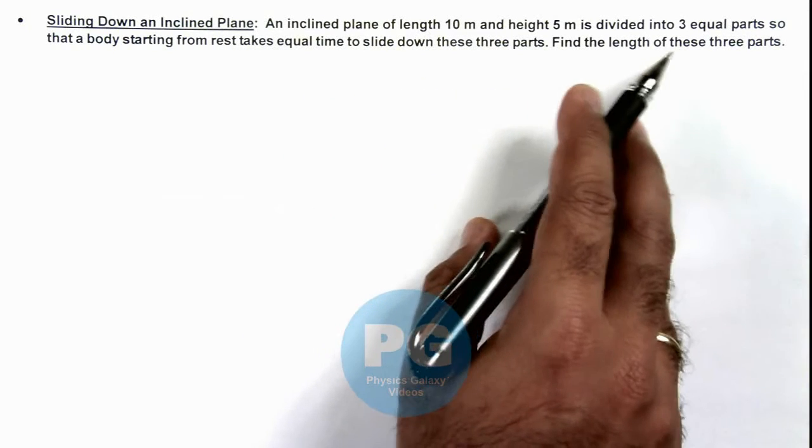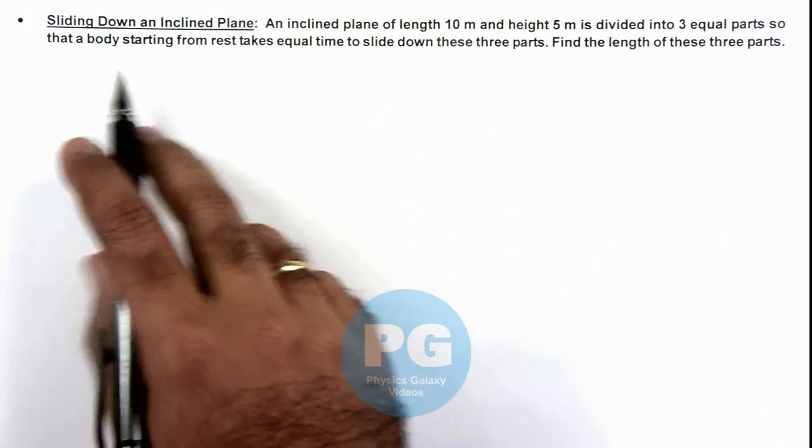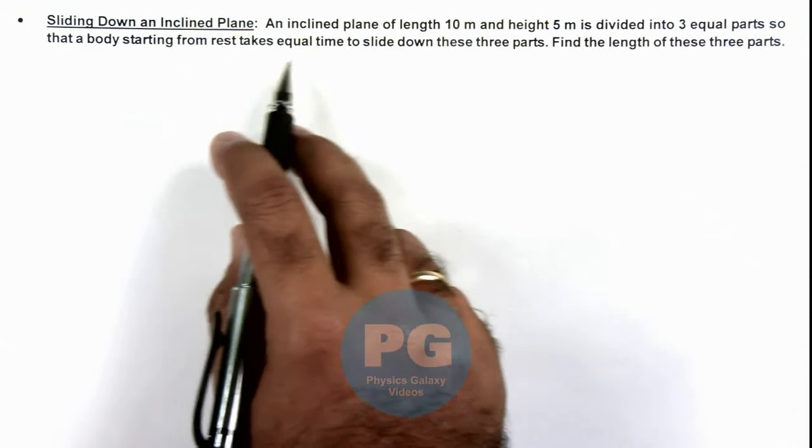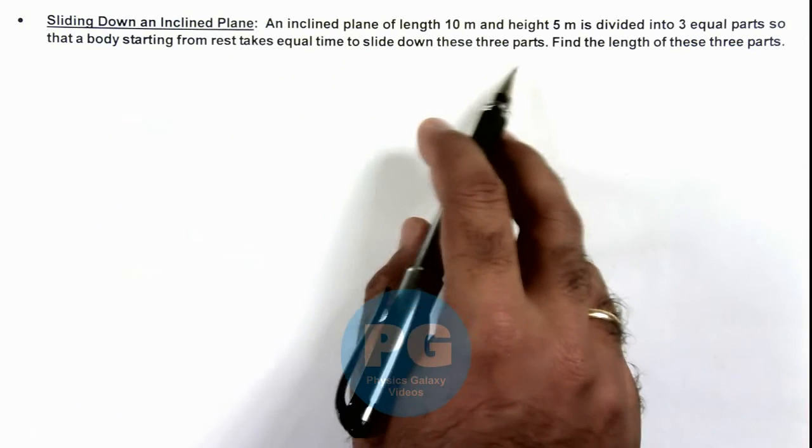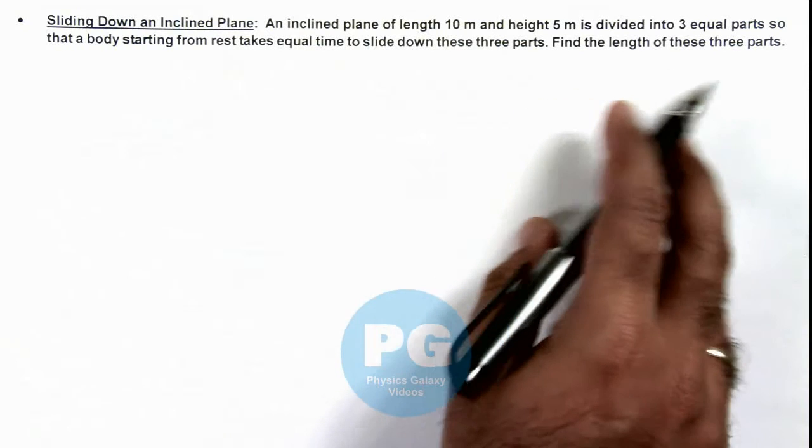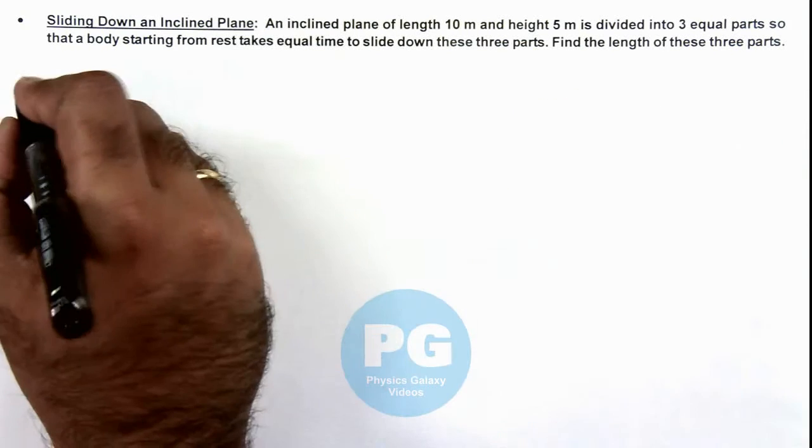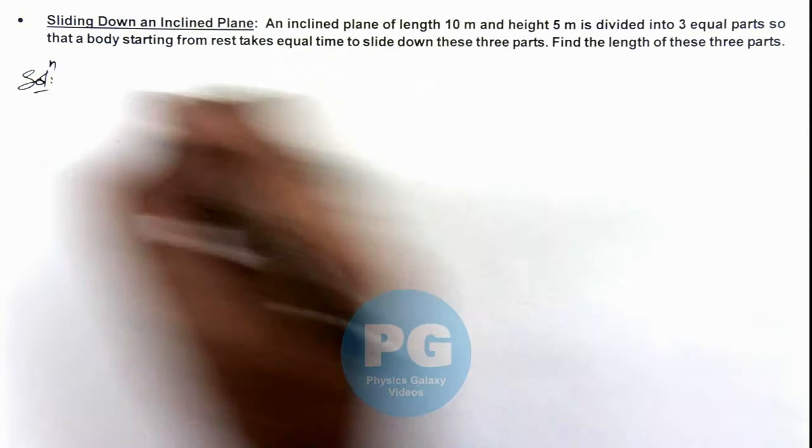is divided into 3 equal parts so that a body starting from rest takes equal time to slide down these 3 parts, and we are required to find the length of these 3 parts. Here, if we draw the situation, it is like this.